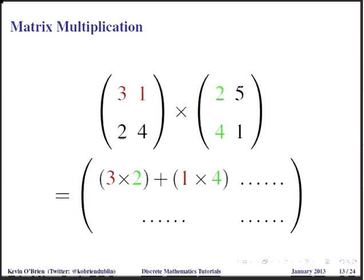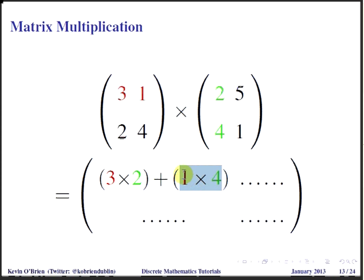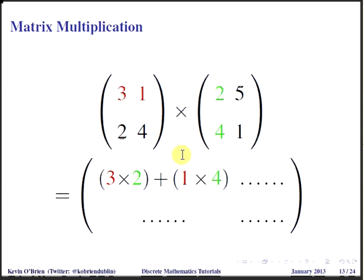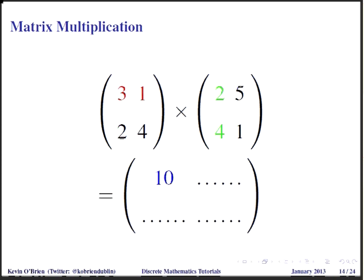Using our example numbers, we're going to multiply the first pair of values, three and two, and the second pair of values, one and four, and add them all up together. So we have three times two plus one times four, and that gives us ten as our answer. That's the first element of the matrix we're looking for.